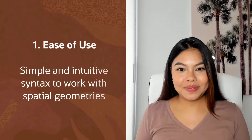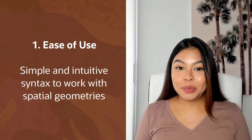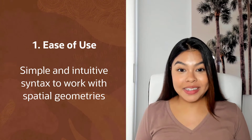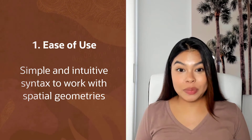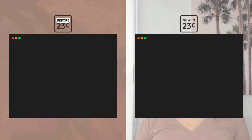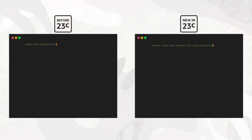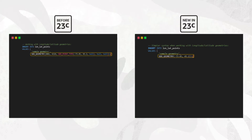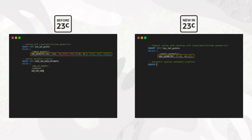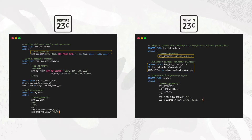First, ease of use. We've simplified and made more intuitive the syntax to work with spatial geometries. For example, using spatial indexes has gotten easier. Previously, before creating an index, you needed to manually insert required metadata. Now, that metadata is created automatically. This is very convenient to operationalize the indexing process.